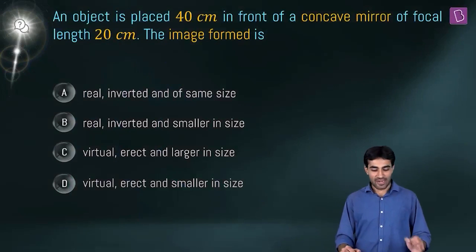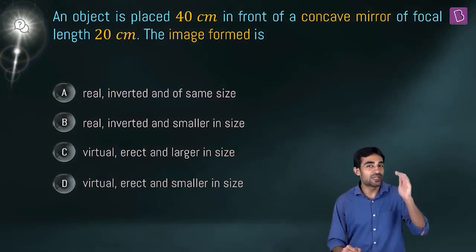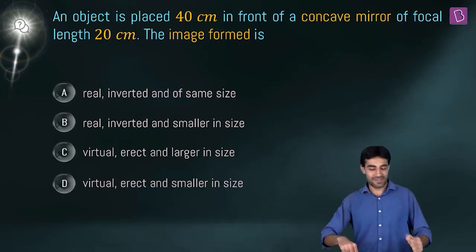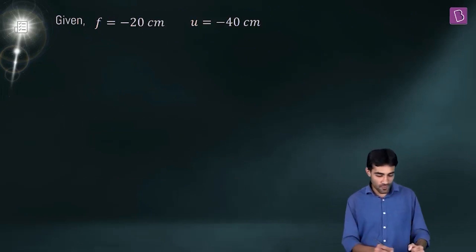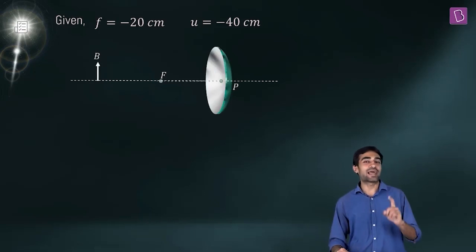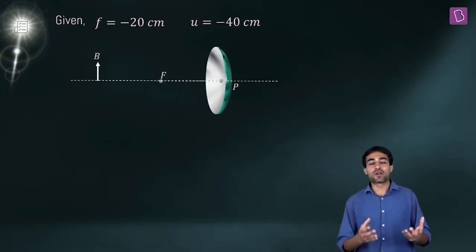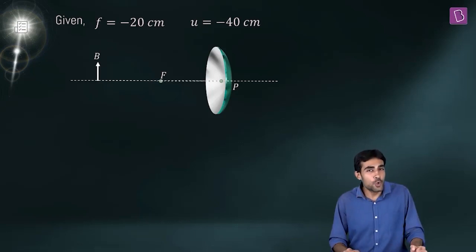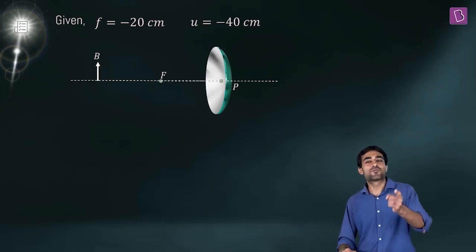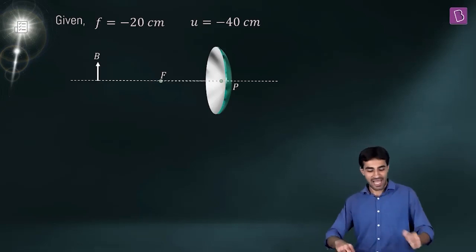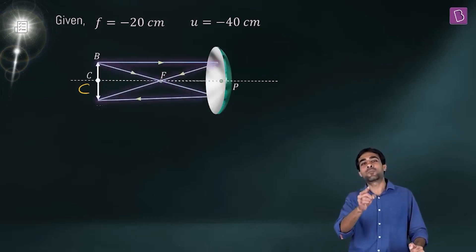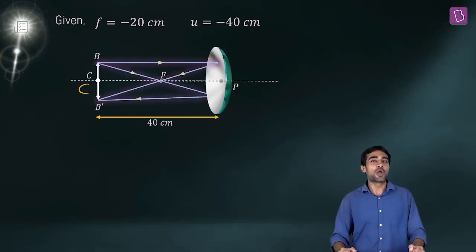Next question: an object is placed 40 centimeters in front of a concave mirror with a focal length of 20 centimeters. We know the object distance and the focal length. Notice that the object distance is twice the focal length, which means the object is placed at the center of curvature. When the object is at the center of curvature of a concave mirror, the image is also formed at the center of curvature.